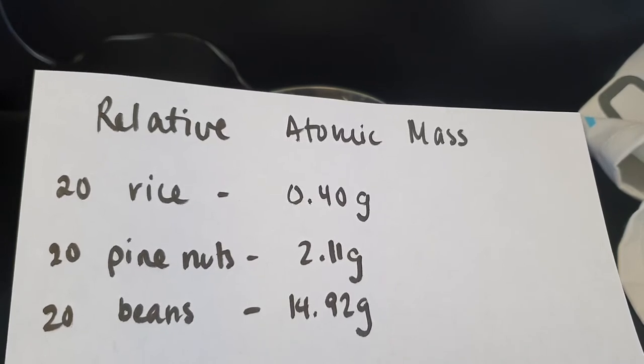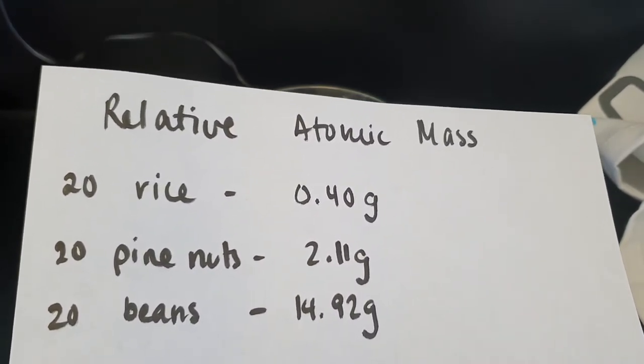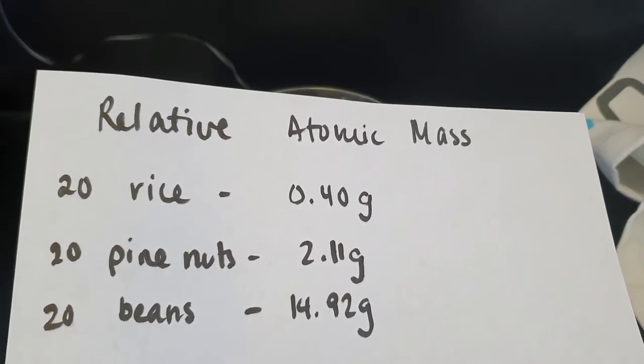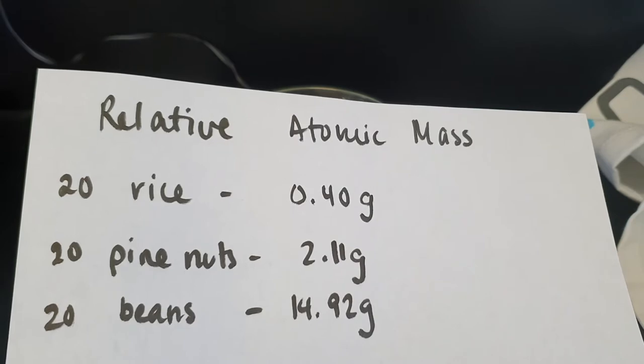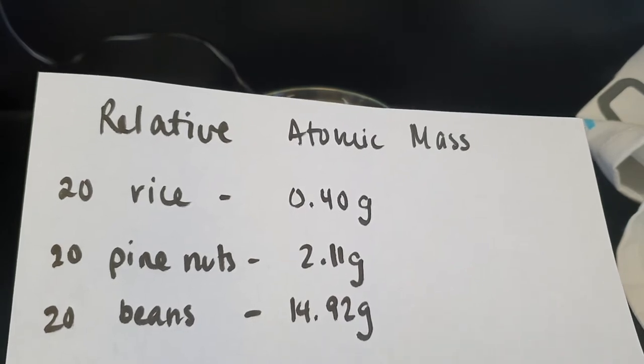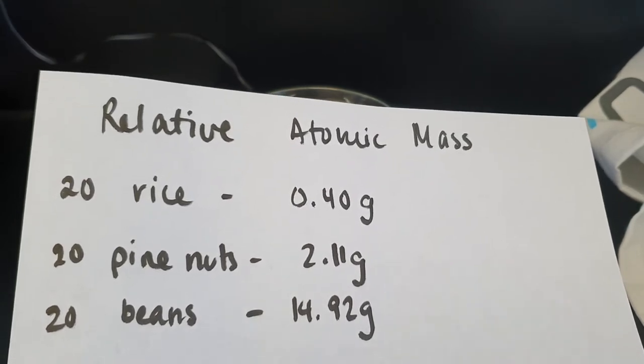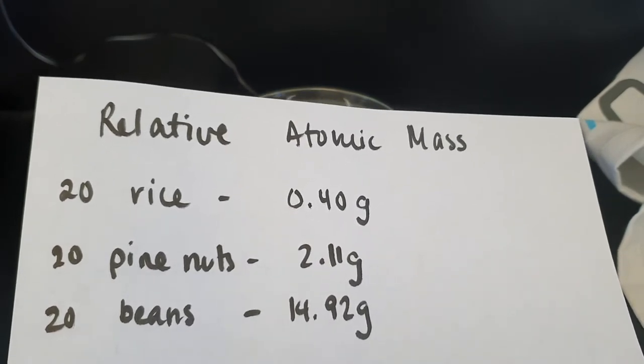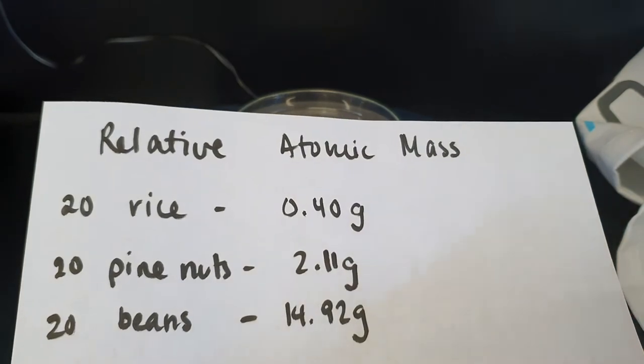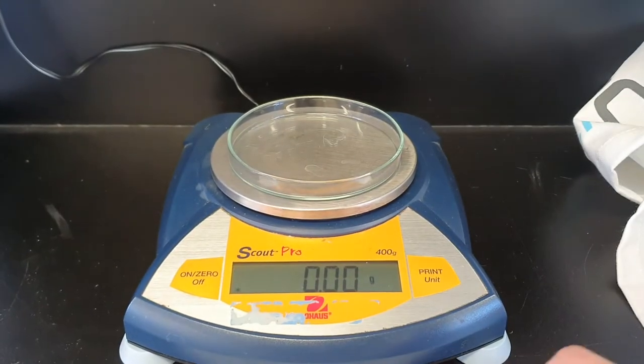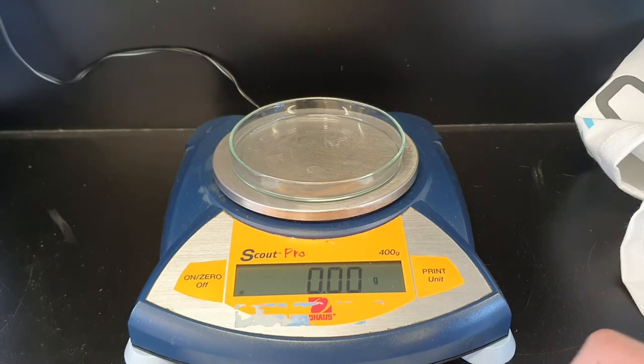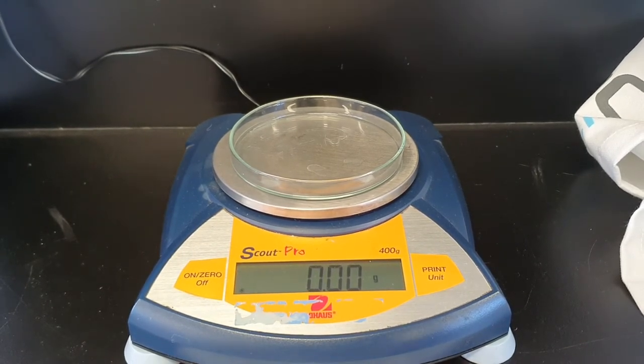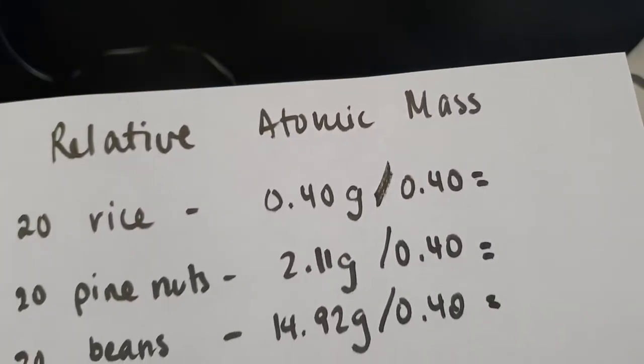And it wasn't until later that chemists use carbon-12, the isotope of carbon, as a reference point to compare other atomic masses to. So how do we make these relative in our case? What we're going to do is we're going to divide each one by the mass of our smallest substance, which is our rice.